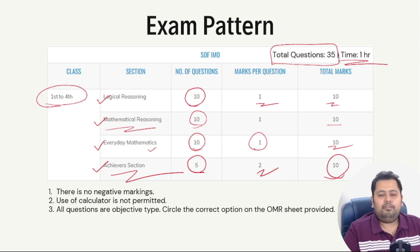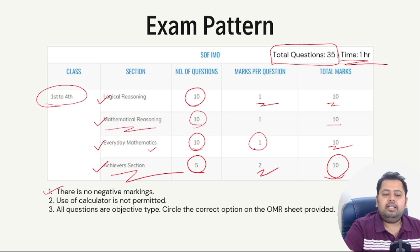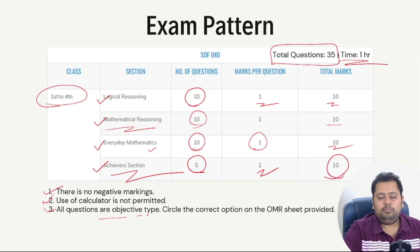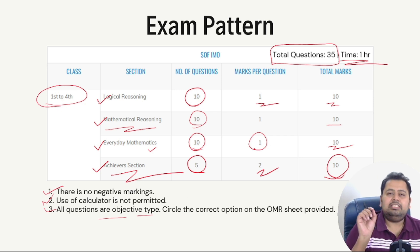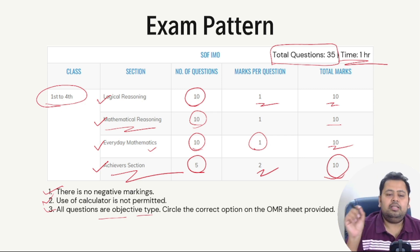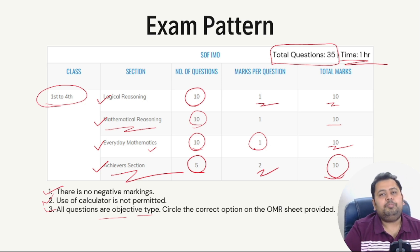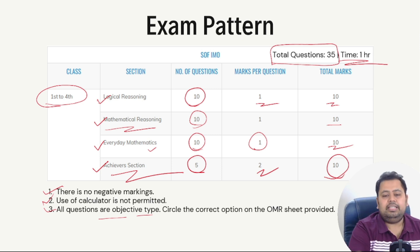Important things to note: there is no negative marking, so it's important to attempt all problems. Use of calculator is not allowed. All questions are objective type — your child will choose the correct option and fill in the OMR sheet provided.